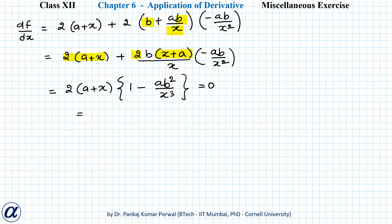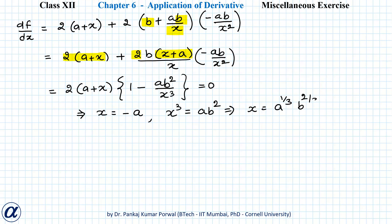Setting dF/dx = 0 gives x = −a or x³ = ab², which gives x = a^(1/3) · b^(2/3). The solution x = −a is a negative value and therefore not feasible, so we are left with only one possible answer for x.